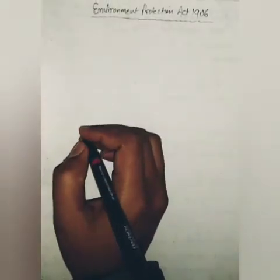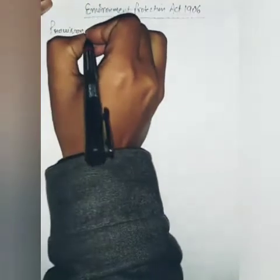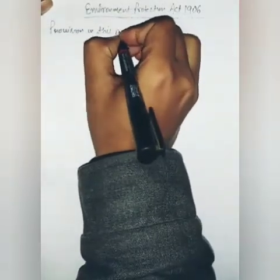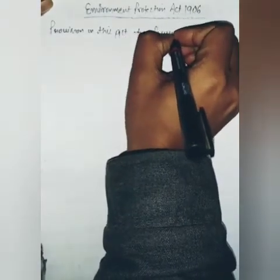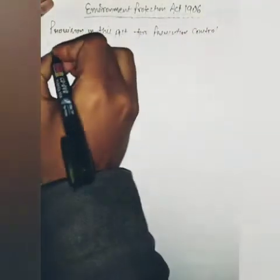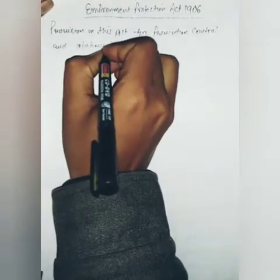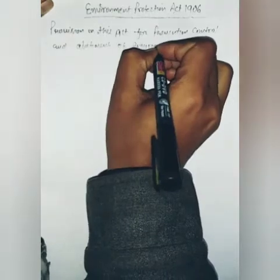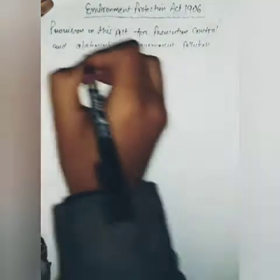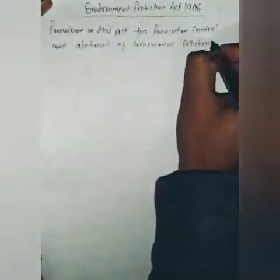Hello everyone, once again welcome back. In today's session we will discuss the Environment Protection Act 1986. In the previous video lecture we already discussed the objectives of this act, various definitions related to this act, and the general powers of the central government. Today we are going to discuss provisions in this act for prevention, control, and abatement of environmental pollution.